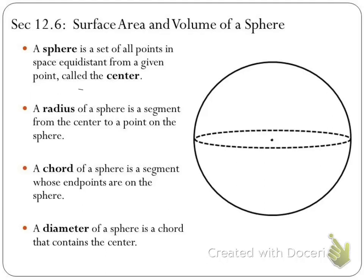This section is looking at surface area and volume of a sphere. We start with our definition: a sphere is a set of all points in space equidistant from a given point called the center. We've talked about circles before, which are just a two-dimensional version of a sphere — a set of points on a plane equidistant from a center. Now we're taking that center and putting it in space, and all the points the same distance away comprise the sphere.